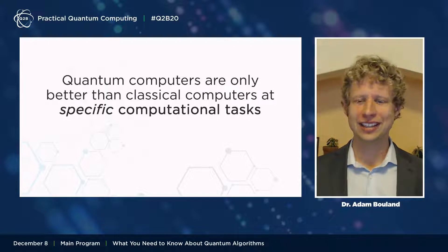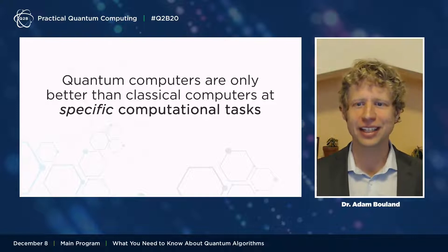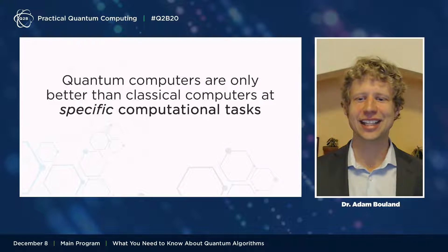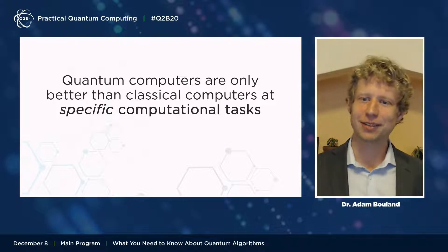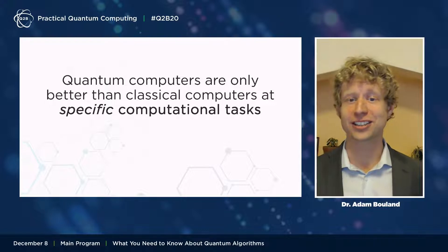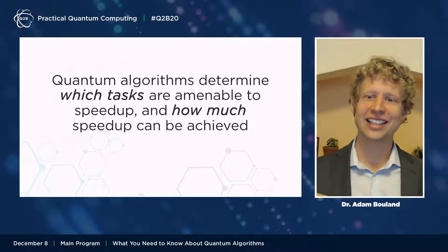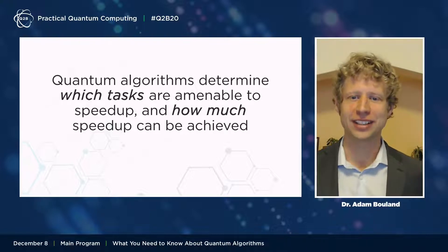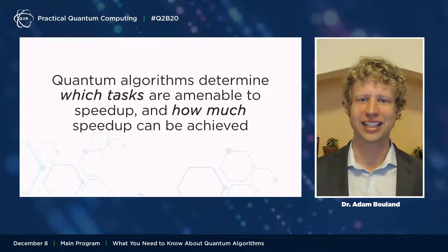One of the main lessons we've learned is that quantum computers are only going to be better than classical computers at specific computational tasks. It's not like buying a faster CPU, which would speed up all computations uniformly. Rather, there's something that requires particular mathematical structure in your problem in order to provide a speedup. It turns out that quantum algorithms determine which computational tasks are amenable to quantum speedups, and exactly how much speedup can be achieved for those tasks.